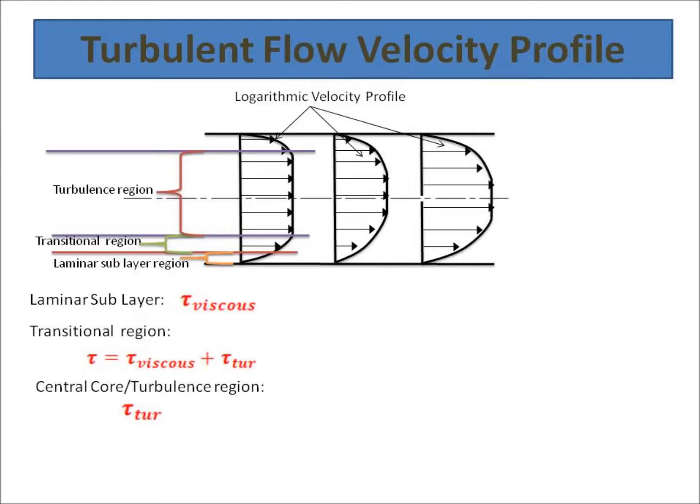Second region is a transitional region where both laminar and turbulent shear forces exist. Hence in this region mixing occurs along with viscous flow. Total shear is always the sum of viscous shear and turbulent shear. The third region is also called the turbulent or core region where only turbulent shear exists and no viscous shear exists.